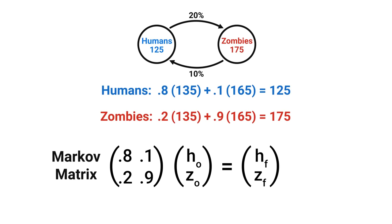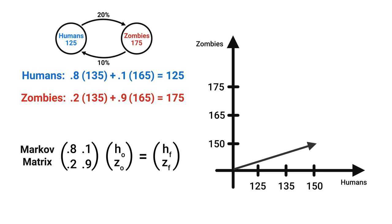But this is like what we just saw. The matrix we have is going to do stuff to or scale and rotate the input vector. The first input was 150, 150 the initial human and zombie populations and after one hour or multiplication it gets moved to 135, 165. But we have to keep going and apply another transformation sending it to 125, 175 the populations we found after two hours.